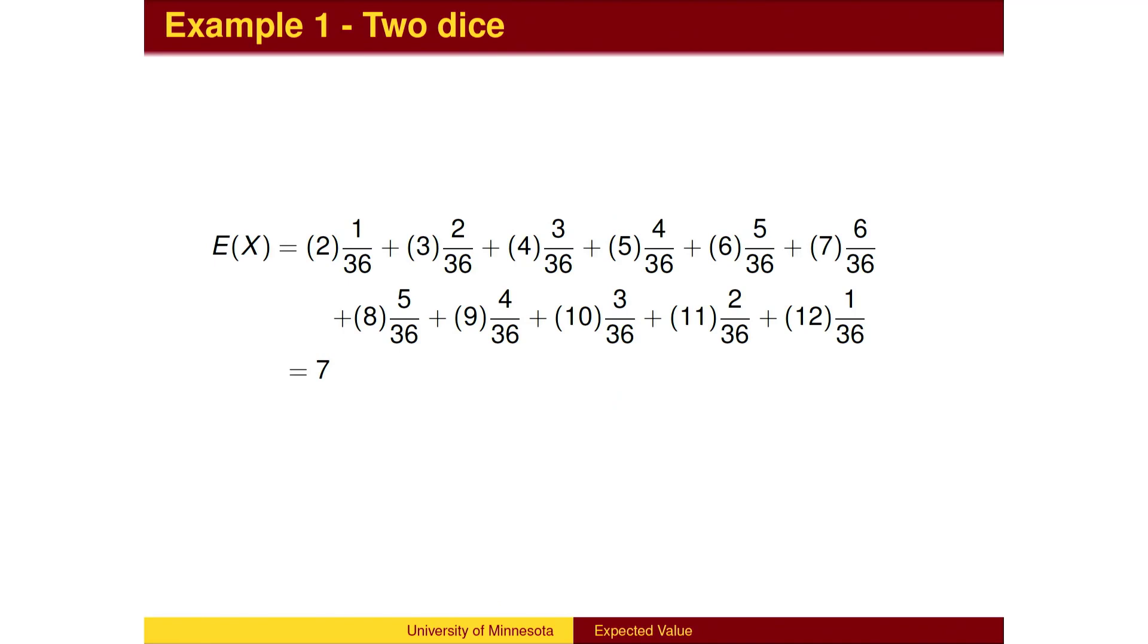To compute the expected value, we take each value times its probability and add them up. The average value on the roll of two dice is 7.